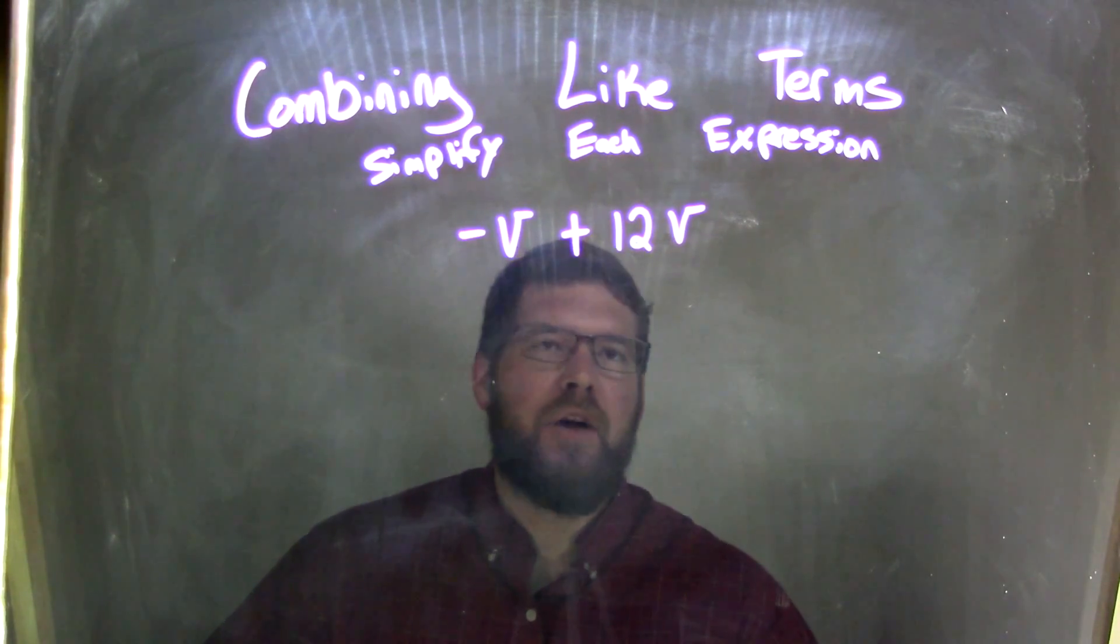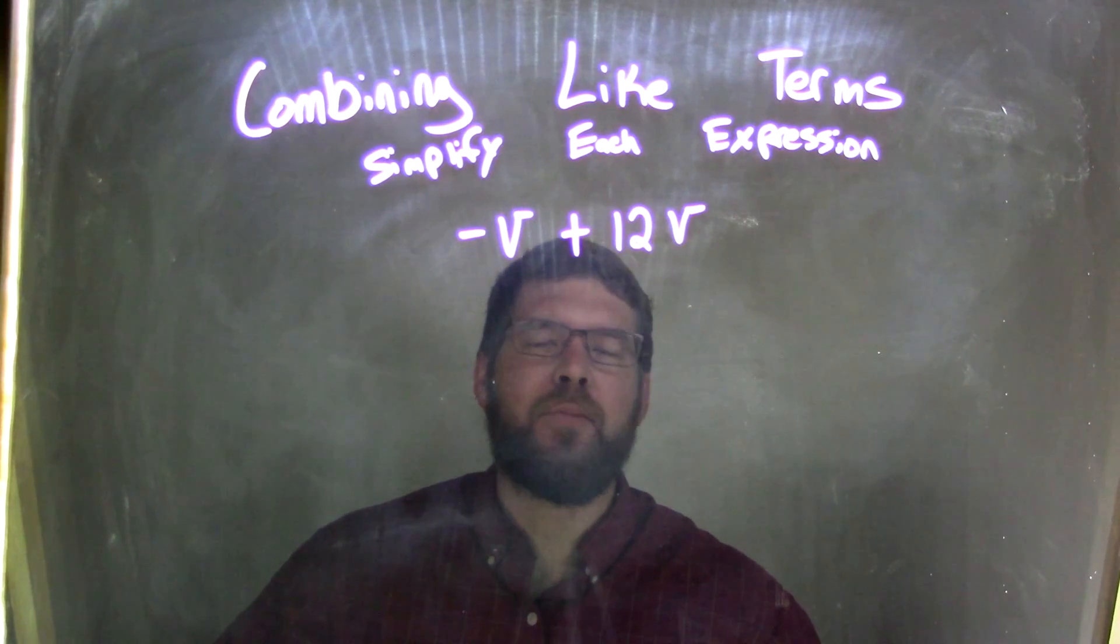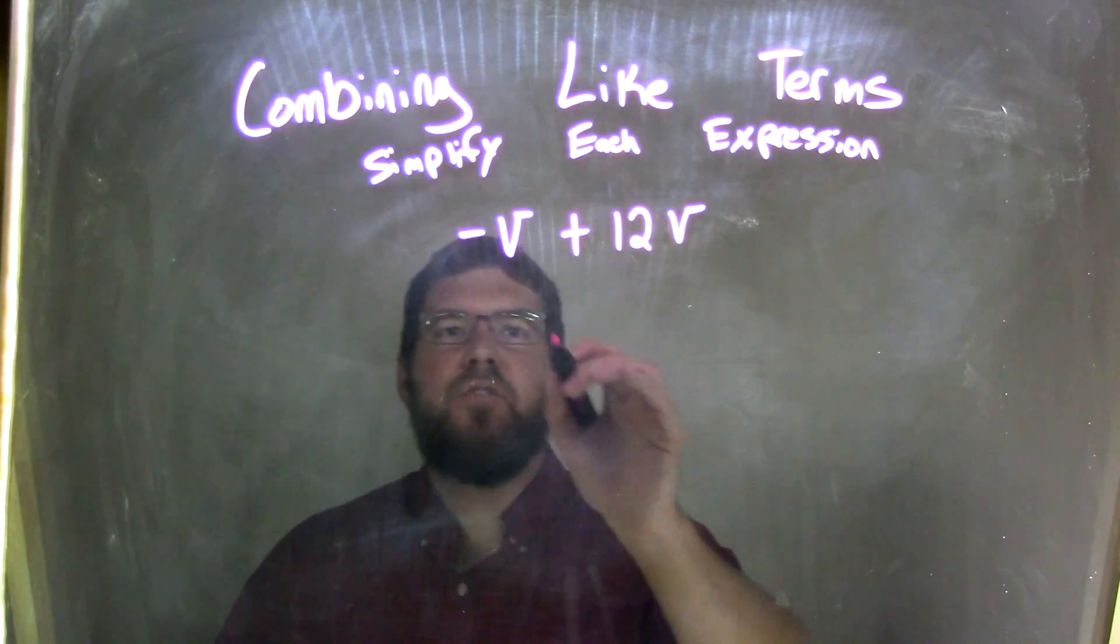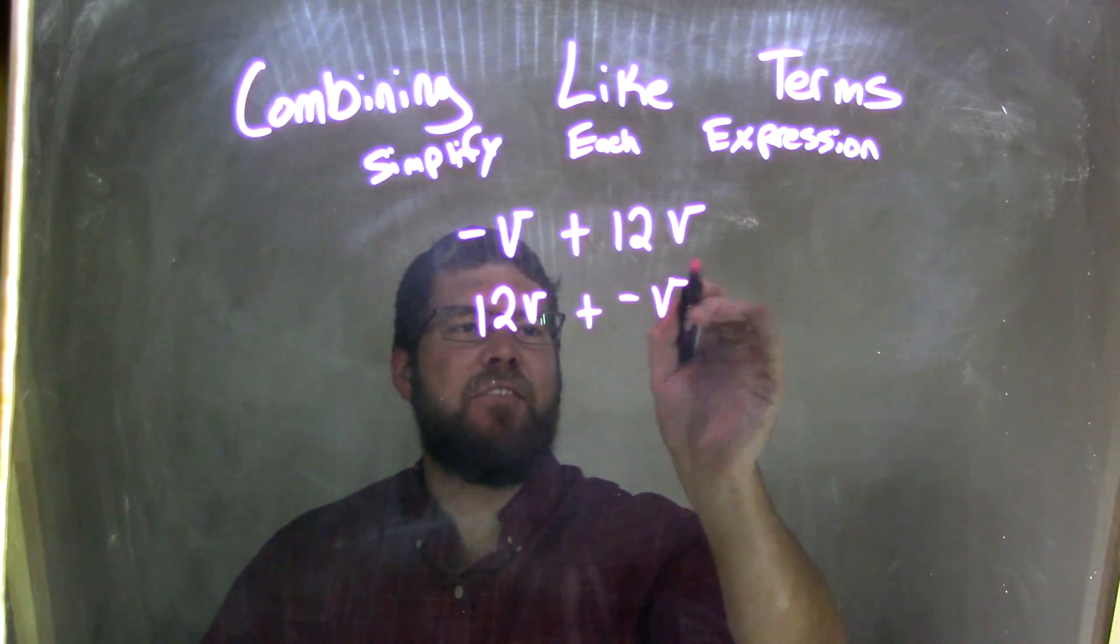I have negative V plus 12V. So what I'm going to do here, and again, there's many ways to solve this problem, is I'm going to use the commutative property to rearrange this. So I'm going to write the 12V first plus a negative V, okay?